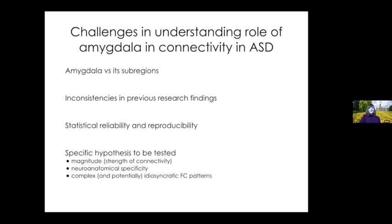A fourth challenge is how to actually pose the specific hypothesis to be tested. You can quantify the strength or magnitude of amygdala connectivity, you can define different levels of neuroanatomical specificity, but those might not be sufficiently sensitive to detect group differences. Rather than simply hypothesizing hypo- or hyper-connectivity, it may be important to consider the precise pattern of functional connectivity with the rest of the brain.